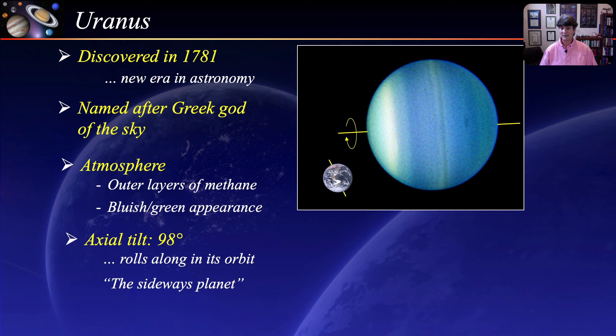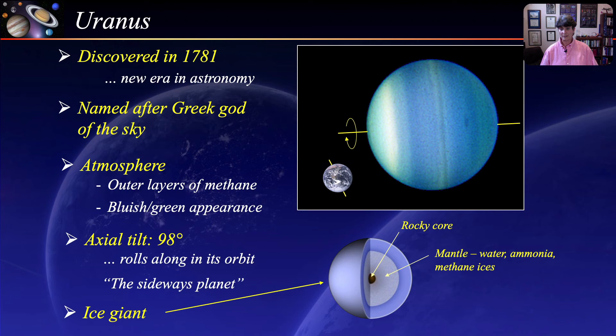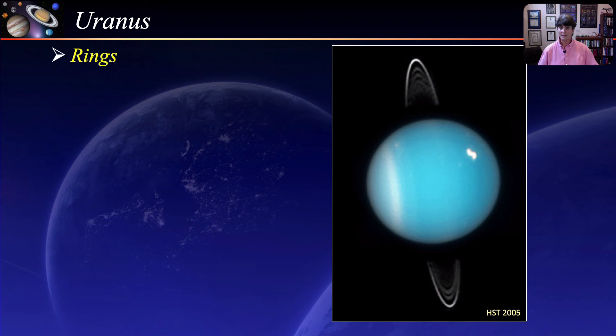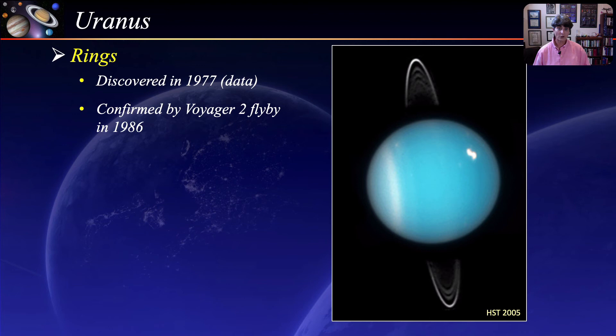Although Uranus is one of the gas giants like Jupiter and Saturn, it is also called an ice giant because of its icy internal structure. At the center is a rocky core surrounded by a mantle of water, ammonia and methane ices, followed by an outer layer of hydrogen, helium and methane gases. Although not as beautiful as Saturn's rings, Uranus also has a ring system — unexpectedly discovered in 1977 during ground-based observations, confirmed by Voyager's flyby in 1986, with new rings found by the Hubble Space Telescope in 2005.